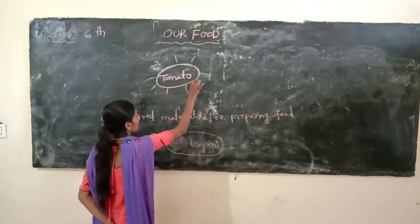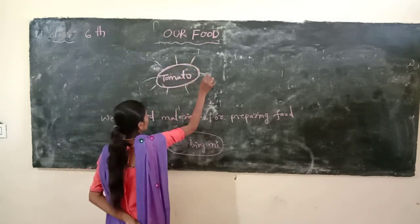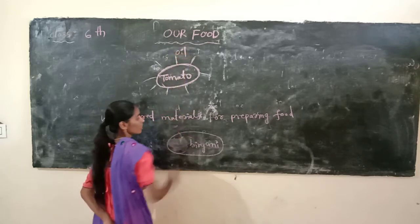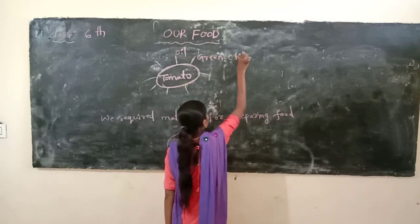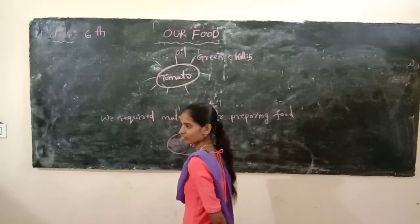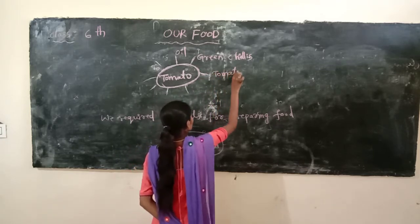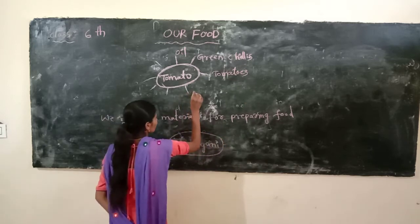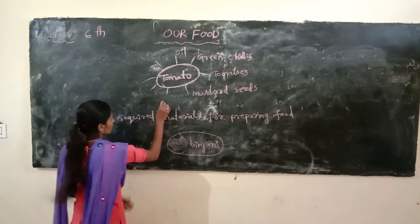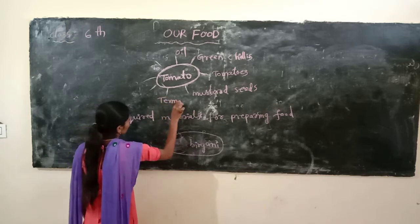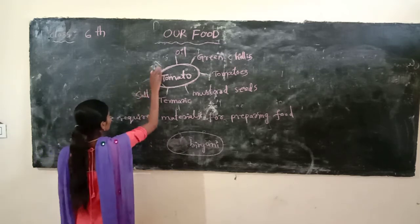For example, I am preparing tomato curry. So what ingredients do we need? First of all: oil, green chillies, tomatoes, mustard seeds, salt, and coriander. These are the ingredients needed for tomato curry.